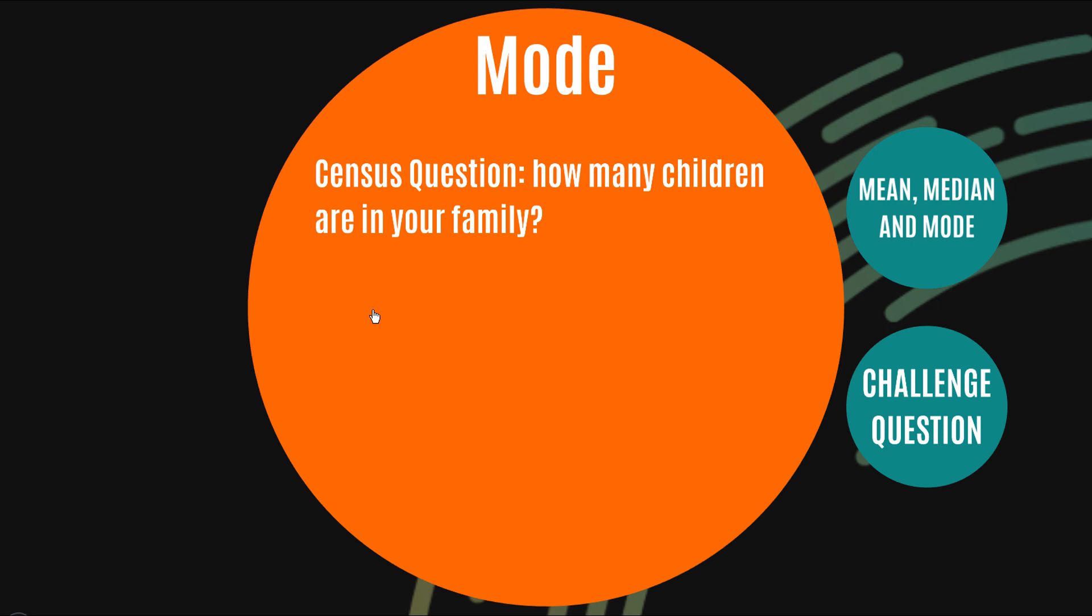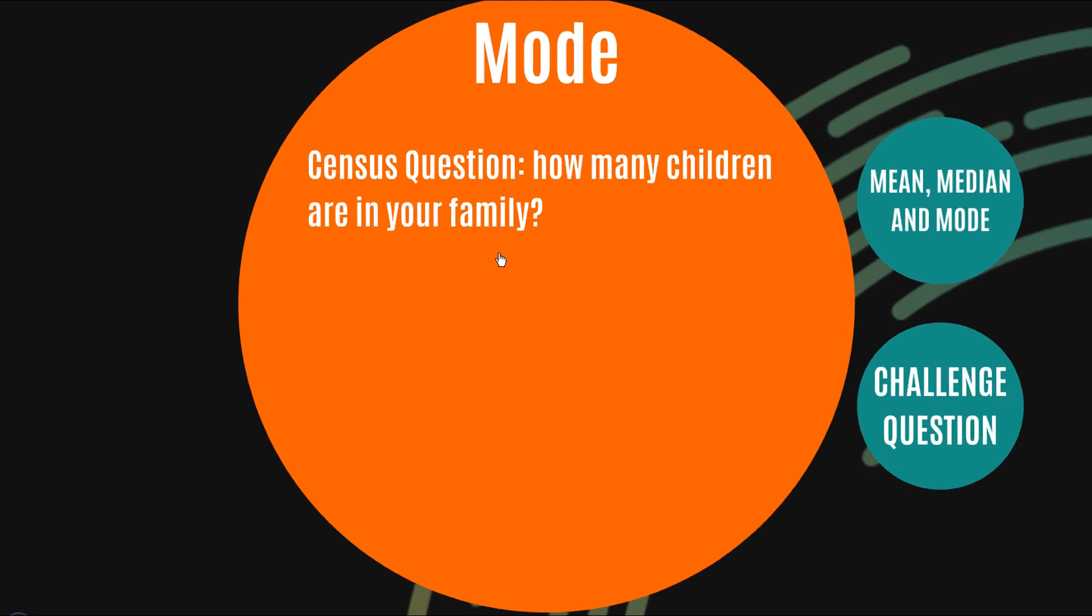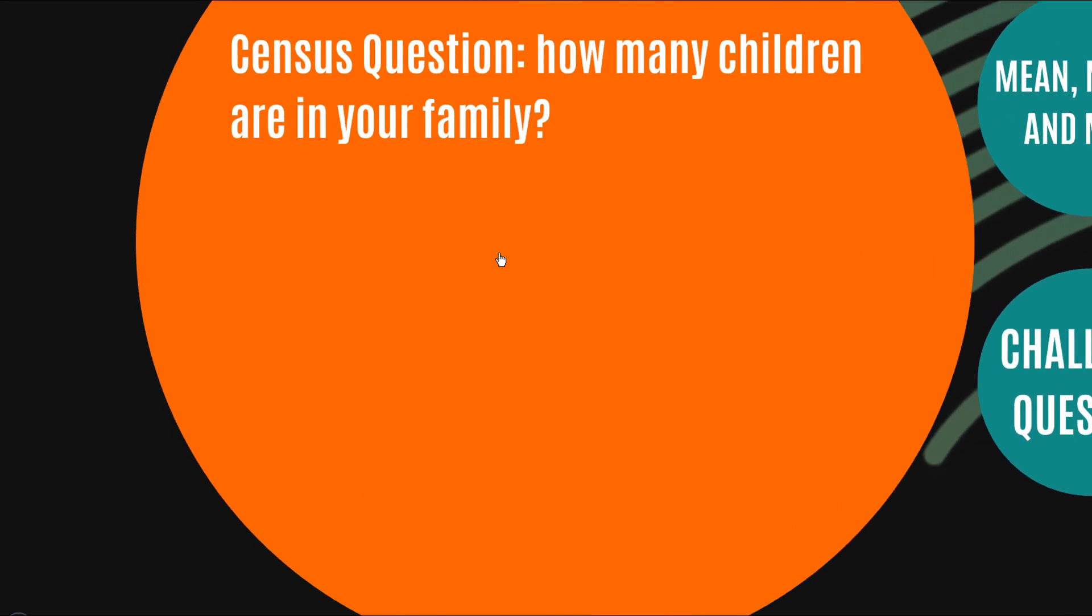But of course, the mode comes into its own when we actually have a decent sized sample. So here's a pretty decent sized sample when we have a census, right? Now there was one in Australia a few years ago, and any Australian viewers will probably be watching this with a wry smile because that certainly went off without a hitch, didn't it? But here's the census question: how many children are in your family? Now I have changed this a little bit for simplicity. I've gotten rid of the families with no children, so these are just families with children.